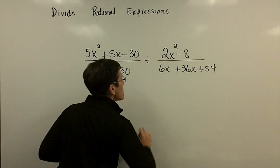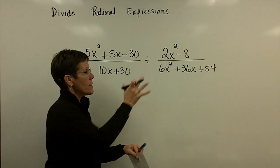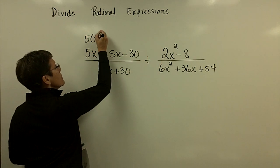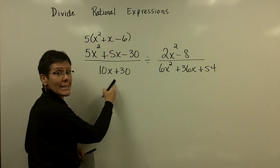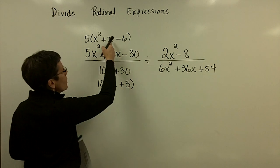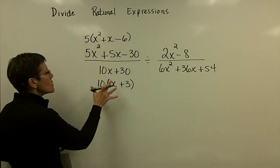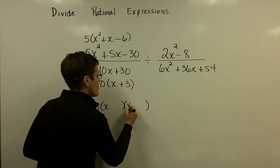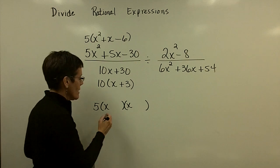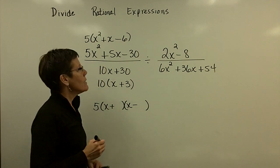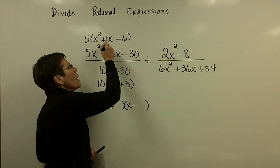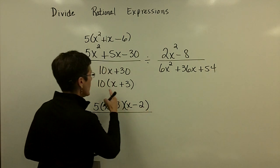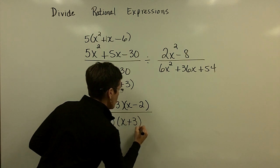Let's look at one more division problem. Even though it's a division problem, I factor everything first and then flip after the fact. Always look for the greatest common factor — this one has a five, and this one has a ten. I need to factor that trinomial into the product of two binomials. The numerator has a five; the trinomial factors as x plus three and x minus two, since I need two numbers whose product is negative six and sum is positive one. The denominator is ten times x plus three.